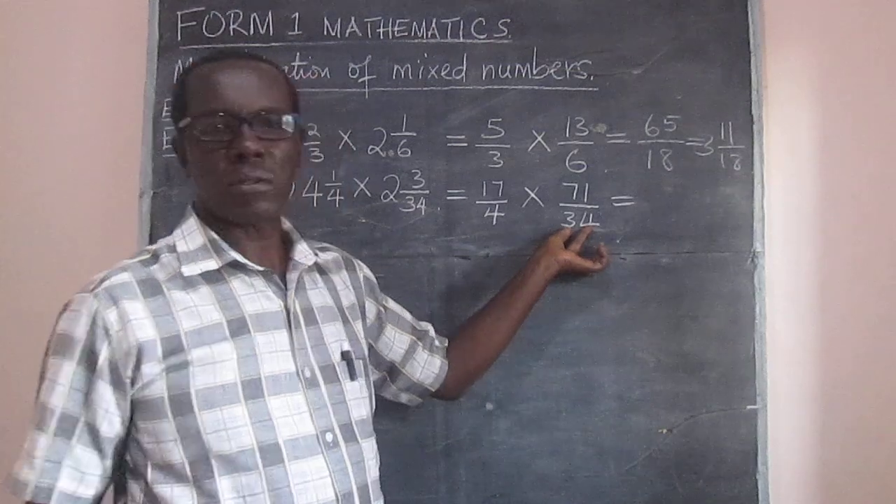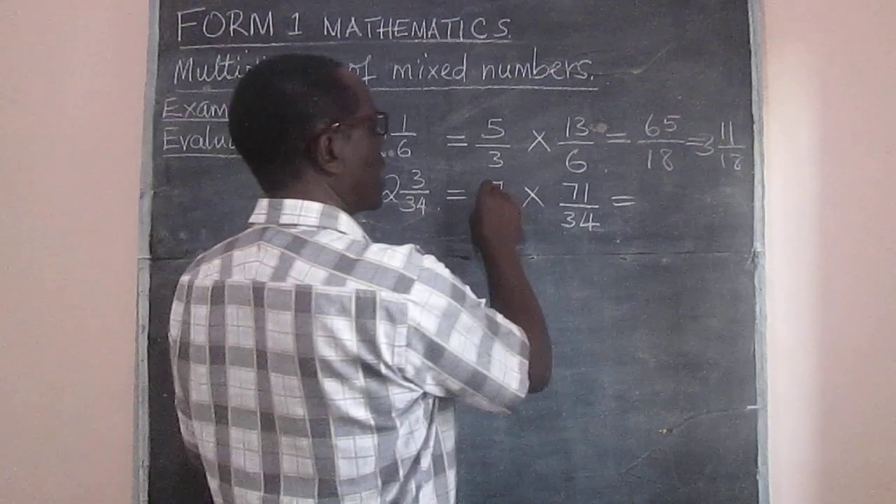But this one can be simplified further because we can see seventeen goes into thirty-four twice. And therefore we have one there and two here. And then this simplifies to seventy-one divided by eight.